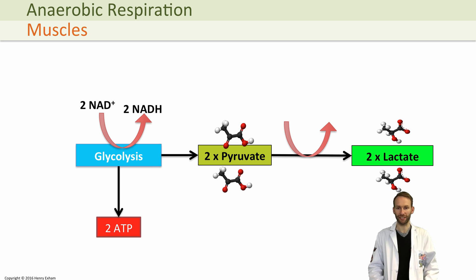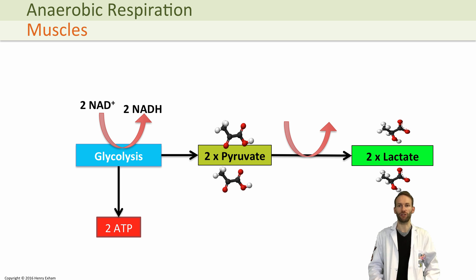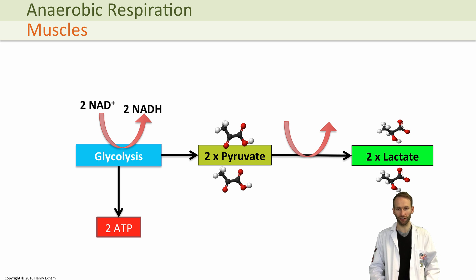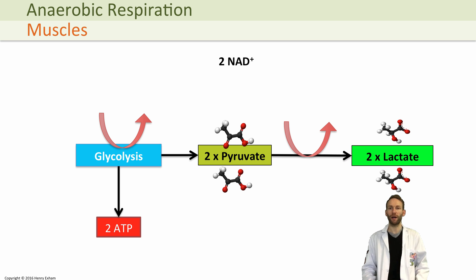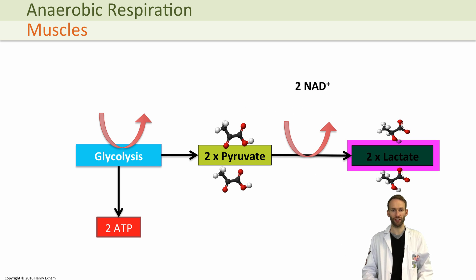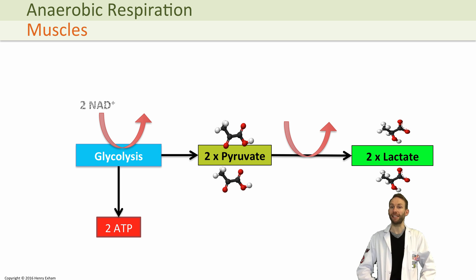This process continues over and over again — we're basically just repeating glycolysis as much as we can. We get two ATPs each time and produce two lactates each time. The NADs that were reduced in glycolysis get oxidised again to form lactate and are then fed back into glycolysis. It's quite a clever system, but you don't get a massive yield of ATP — only two each time. But if you haven't got any oxygen, there's no alternative.